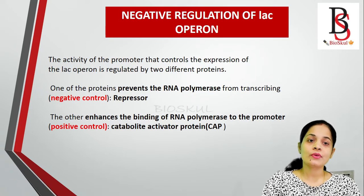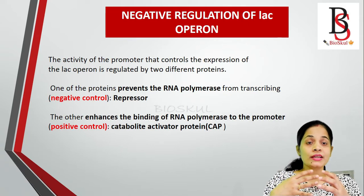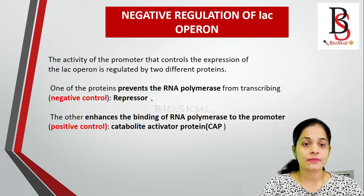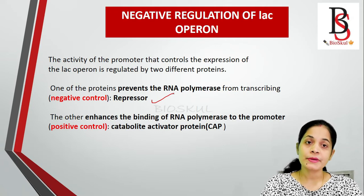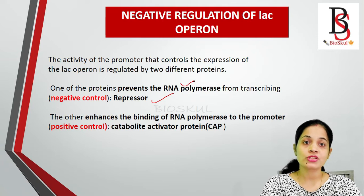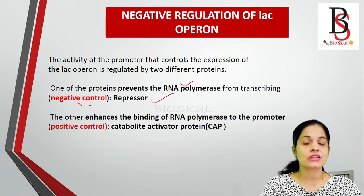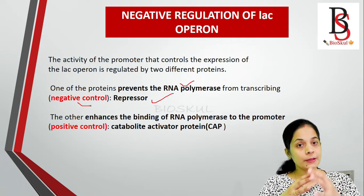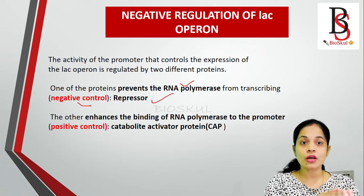The activity of the promoter that regulates the expression of the lac operon is regulated by two proteins. The first protein is known as the repressor protein. The repressor protein inhibits or prevents the binding of RNA polymerase to the promoter, and this type of control is known as negative control or negative regulation.